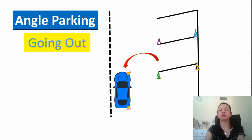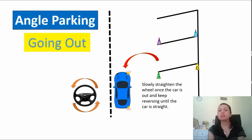Slowly straighten the wheel once the car is out and keep reversing until your car is straight. Make sure that you do a full stop, put the gear into P and lift the handbrake. That means that you're done with the parking and you should be able to pass.